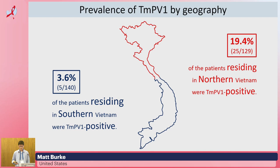This is really interesting because it goes against our hypothesis, so we wanted to look further into this geographical aspect. We see that 19.4% of patients residing in northern Vietnam were TMPV-1 positive, and only 3.6% of patients residing in southern Vietnam were TMPV-1 positive.